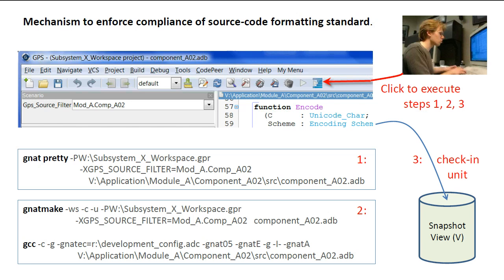Before discussing control of the source code format, let's return briefly to the programming activity. Code is written once, but read many times, by many different people, especially during the maintenance phase where applications spend the majority of their lives. Therefore, it is very important that the format of the code be consistent throughout the lifetime of the application. Most organizations publish style guides to document the required source code format. However, such requirements are difficult to manually enforce, and style guides tend to be ignored.